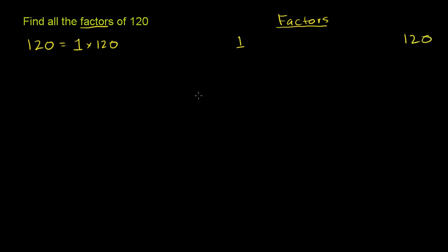Now let's think about others. Is 2 divisible into 120? Does 120 equal 2 times something? When you look here, you immediately recognize that 120 is an even number — its 1's place is a 0. As long as its 1's place is a 0, 2, 4, 6, or 8, as long as it's an even number, the whole number is even and divisible by 2.